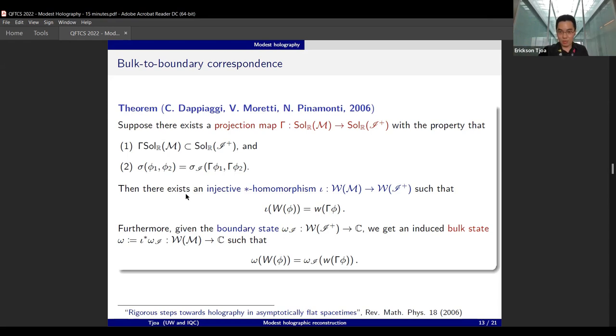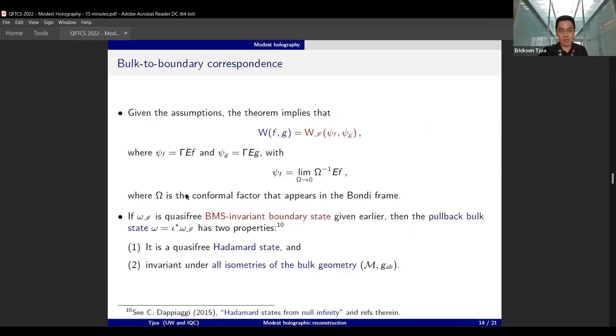It is really in this sense that we want to think of things holographically. What this really means is that, given the assumptions, if the assumptions are true, then the boundary and the bulk Wightman functions can be identified with an appropriate boundary smearing function that is related by a projection map—essentially you do a large r expansion and send everything to scri plus with proper scaling. It is also remarkable that if the boundary state is BMS-invariant, once you pull it back it will respect all the isometries of the bulk, and furthermore, it's going to be Hadamard.